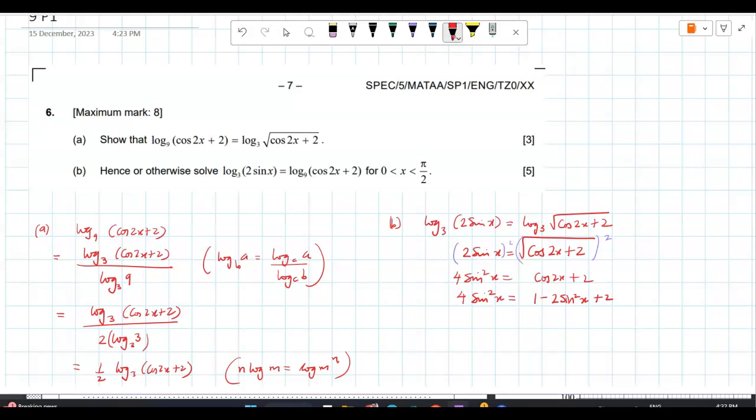Now, get all terms, sin square terms on one side. So, 6 sin square x is equal to 3. Sin square x is equal to half.